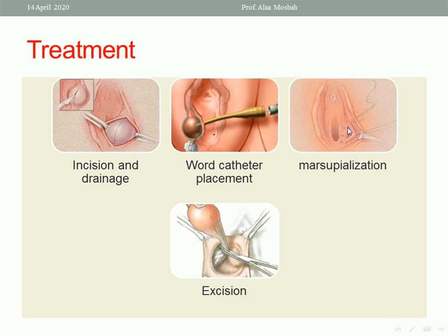Marsupialization involves incision and drainage of the cyst or abscess — though it is preferred only when there is no active infection, not during an abscess. For a Bartholin duct cyst, we do incision and drainage, then marsupialization by suturing the edge of the cyst wall to the vestibular mucosa all around to keep the tract open for drainage. The last line of treatment is excision — incision, dissection, and removal of the Bartholin cyst or abscess.